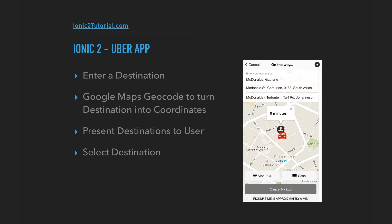We'll allow the rider to enter a destination, and then we'll use the Google Maps API Geocode to turn those destinations into latitude and longitude coordinates. We'll present the destination options to the user and allow them to pick the closest match.